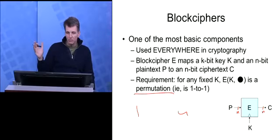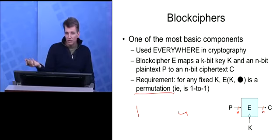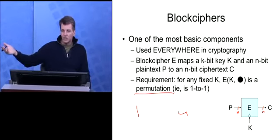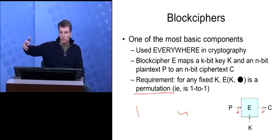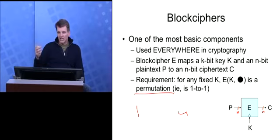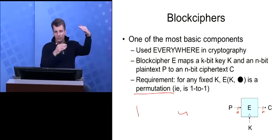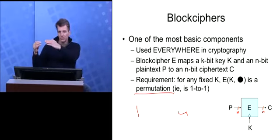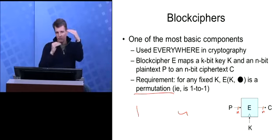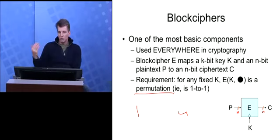One-to-one-ness is another requirement, which means it's invertible. So that means if I invert X, Y, Z, I go back to David. Another way of saying the same thing: two different inputs always map to two different outputs. You can't have two inputs mapped to the same output — if you do, it's not a one-to-one map. We need this one-to-one mapping because we need to be able to decipher. We need this block cipher to be invertible for every given key.